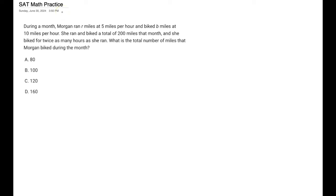during the month Morgan ran R miles at 5 miles per hour and biked B miles at 10 miles per hour. She ran and biked a total of 200 miles that month and she biked for twice as many hours as she ran. What was the total number of miles that Morgan biked during the month?